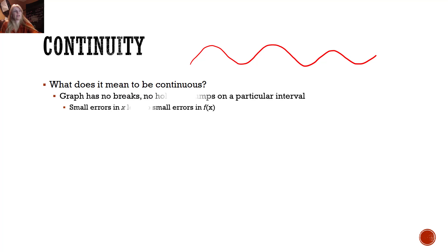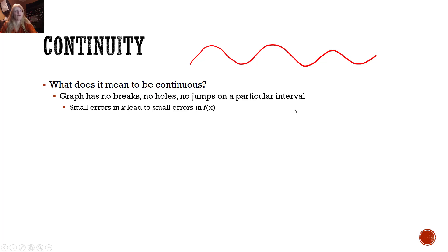In other words, we have a graph that has no breaks, no holes, no jumps on a particular interval. We need to stress that because it may not be continuous overall, but we might just look at a particular interval. What this means is very small errors in x...